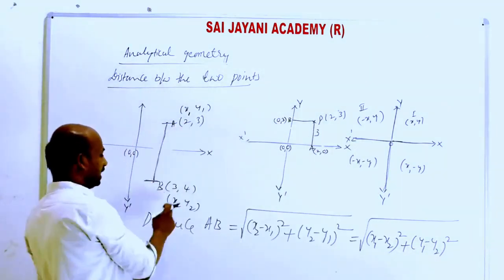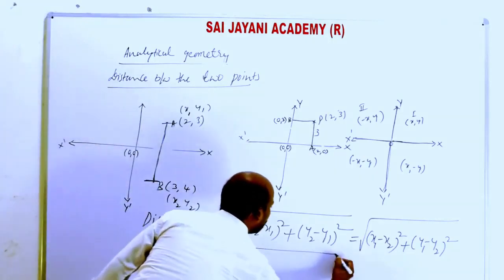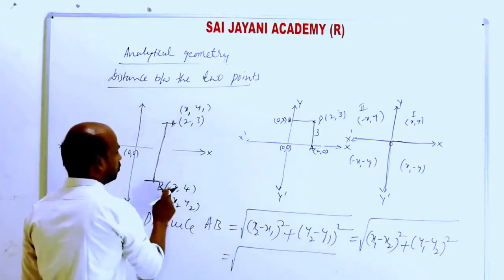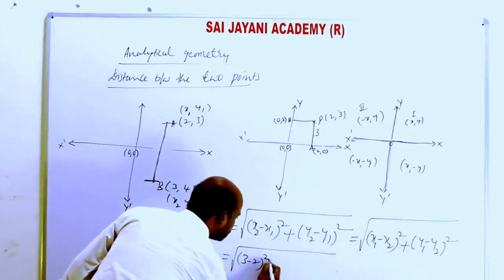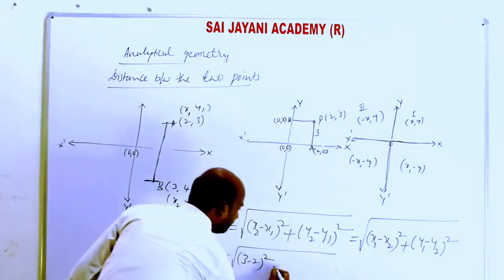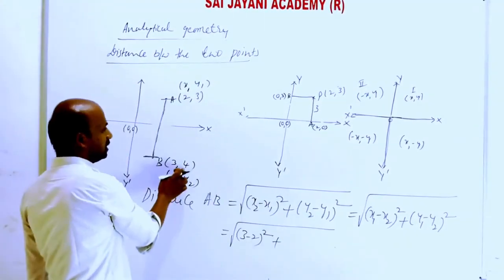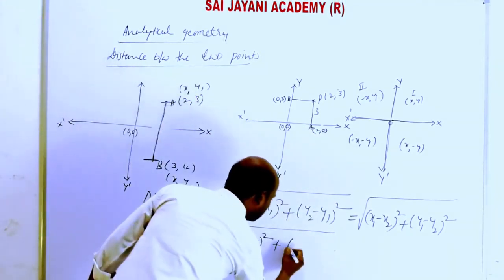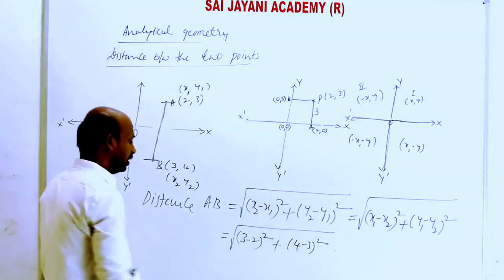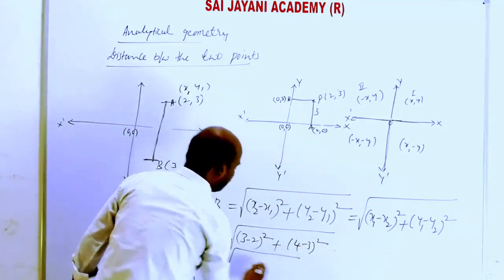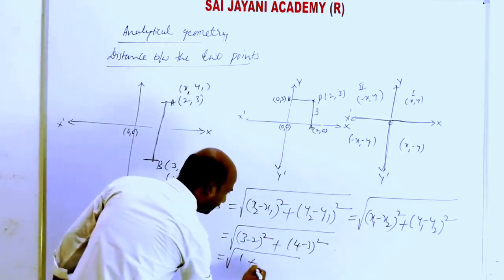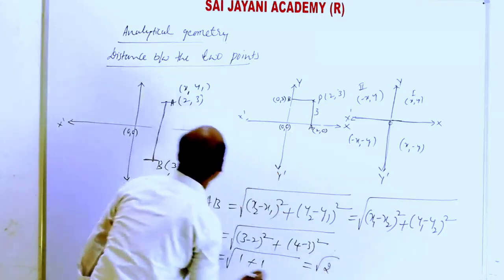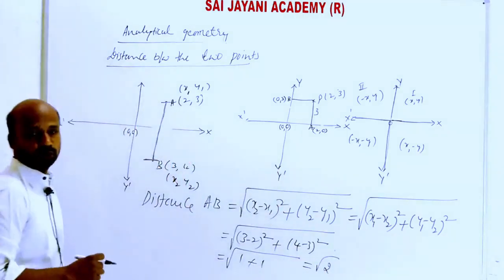For example, let A be (2, 3) and B be (3, 4). Then AB = √[(3 − 2)² + (4 − 3)²] = √[1² + 1²] = √[1 + 1] = √2. So the distance between points A and B is √2 units.